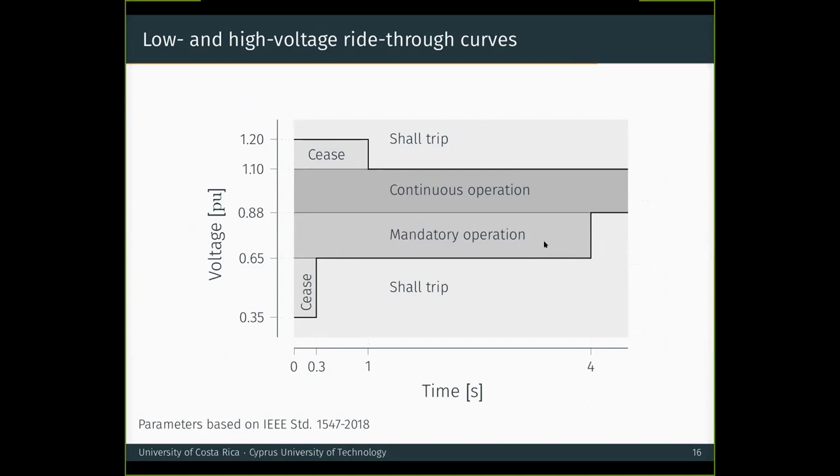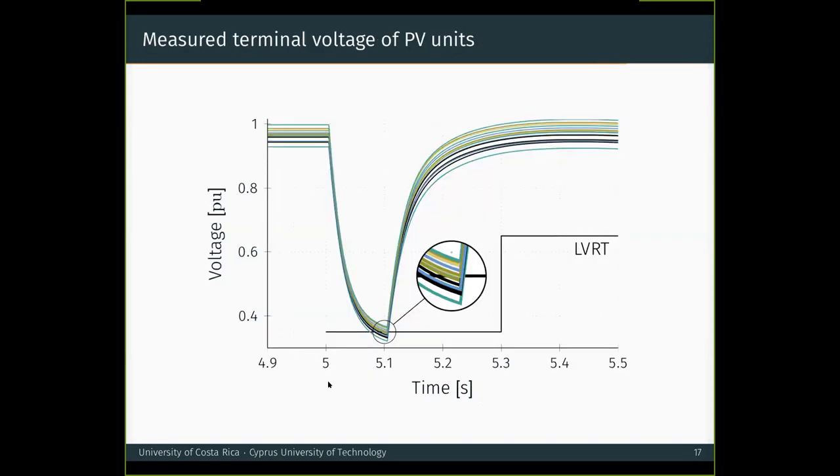However, if the voltage drops below this lower line, which is a low voltage ride-through curve, then the units should trip. With the exception of this limit, which was raised from 0.3 to 0.35, just to obtain more diverse responses, all parameters are based on the IEEE 1547 standard. So knowing this, let us return to the terminal voltages. When we zoom in and superimpose the low voltage ride-through curve, we can see that some units stay above it, but others go below and therefore should trip. And how can we determine what fraction will do that? Again, we need to model all voltage levels. So from this picture, it is to be expected that some units trip while others do not.